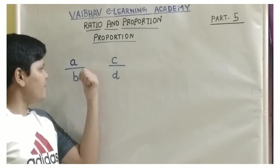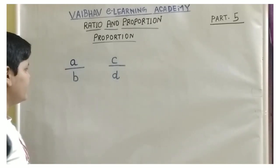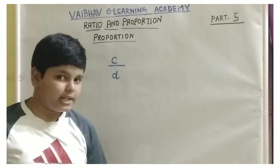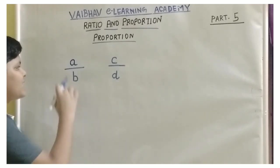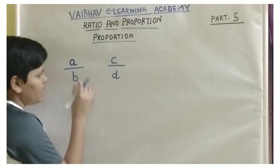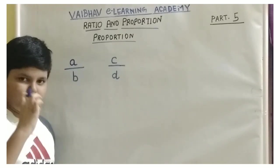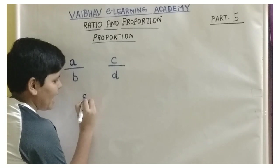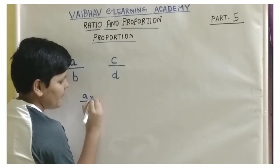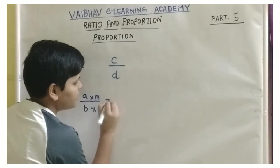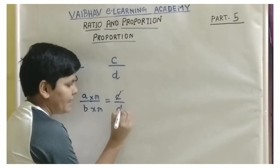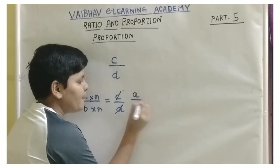Now, for example, if we have a by b and c by d, and if a and d are being multiplied, b and c are being multiplied, we get that there is a proportion. We have a formula: if a by b, a rational number, can be multiplied by any constant number m, we get the answer c by d. If we simplify c by d, we should get a by b.